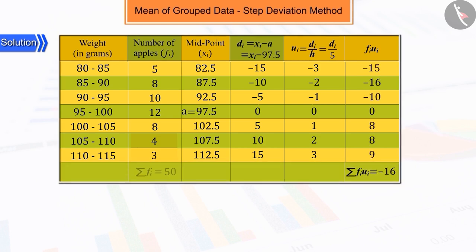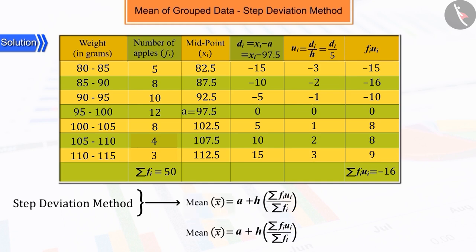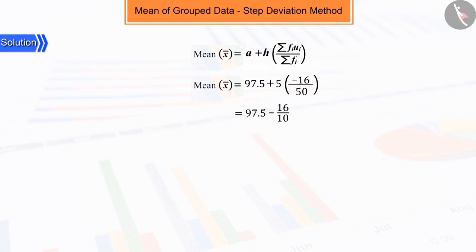Substituting the values of the assumed mean A, the class interval h, summation fi ui and summation fi in the above formula and solving, we obtain the mean as 95.90.